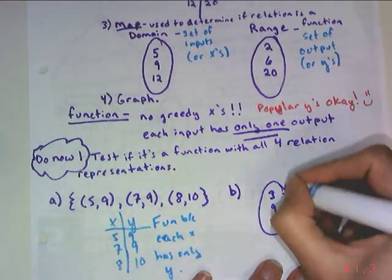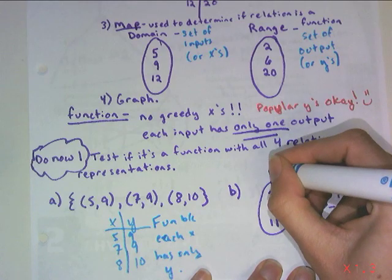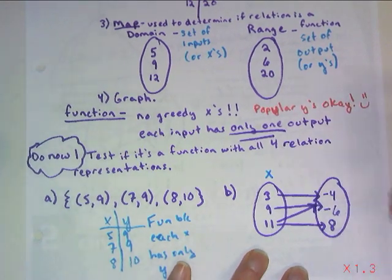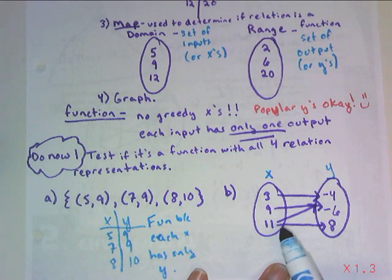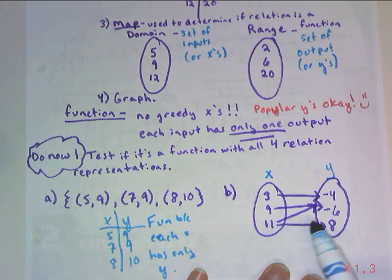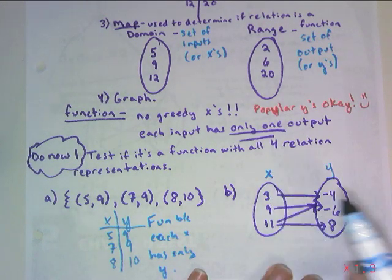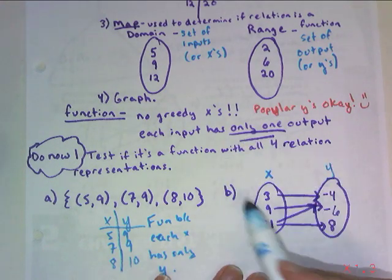This map here, the first circle remembers our domain, it's our x's, and the second circle here is our range, it's our y's. We look at it and we have a problem here because at 11, look at how 11 is being greedy. It's going towards the negative 6 and the 8. So each input has to have just one output. We cannot have a greedy x.